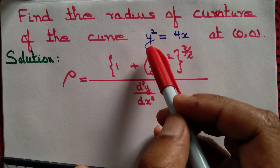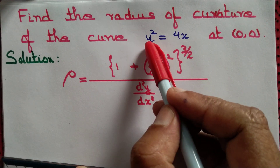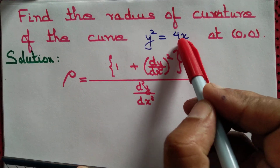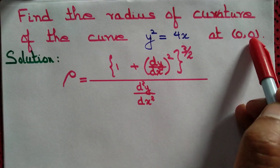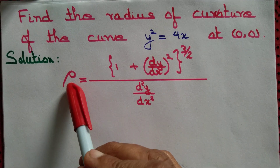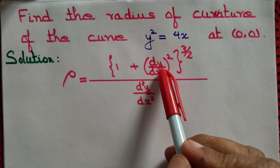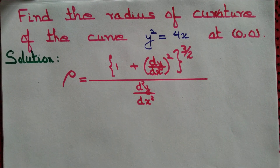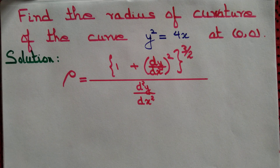Let's find the radius of curvature of the curve y² = 4x at the origin. We have the standard formula for radius of curvature, but we are tempted to apply it — we cannot. Let's see why.